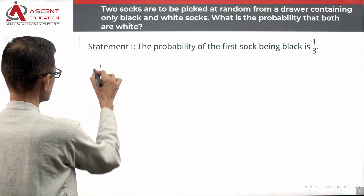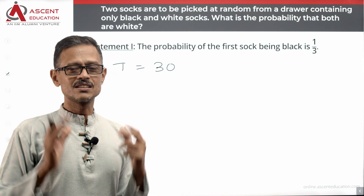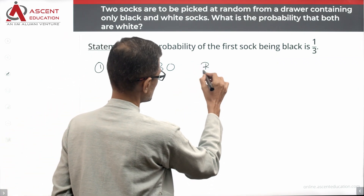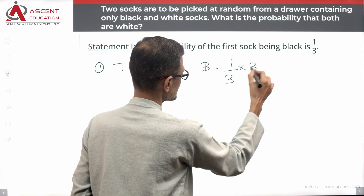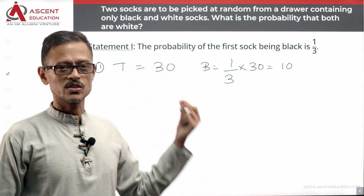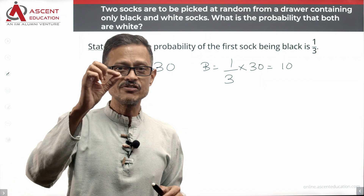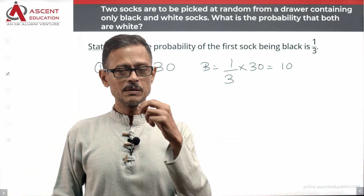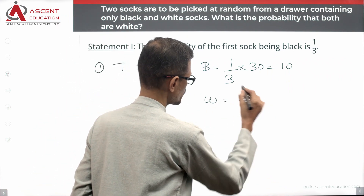Let's try with a total of 30 socks and see. If there are 30 socks total and the probability of a black sock is 1 by 3, then the number of black socks is equal to 10, and the number of white socks is equal to 20.